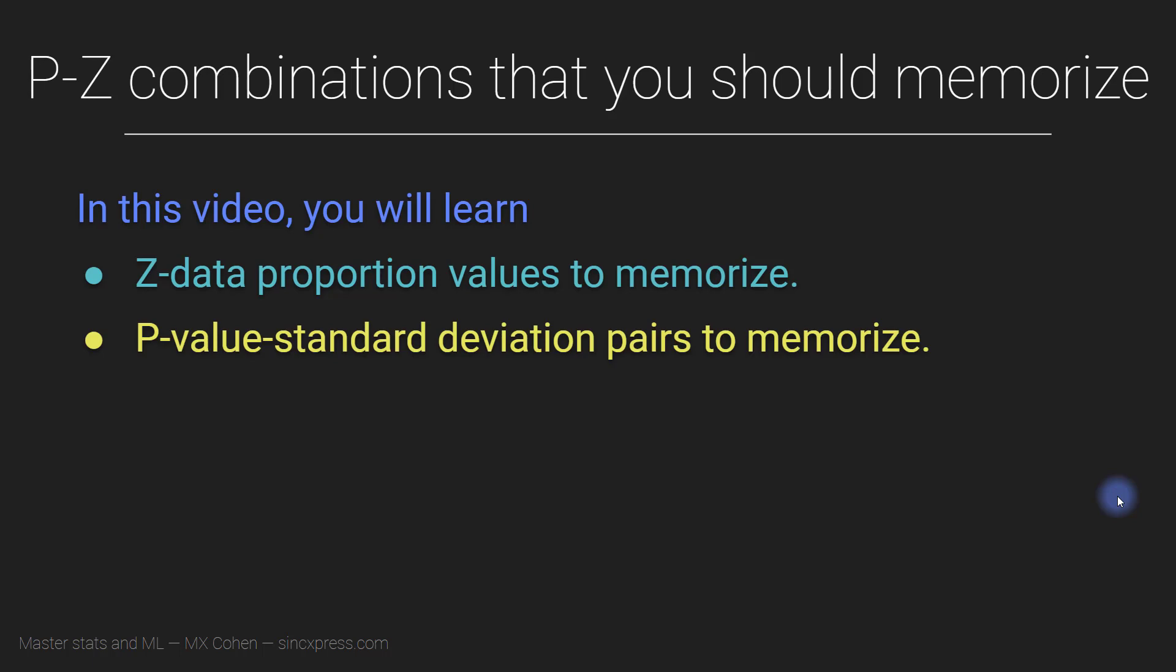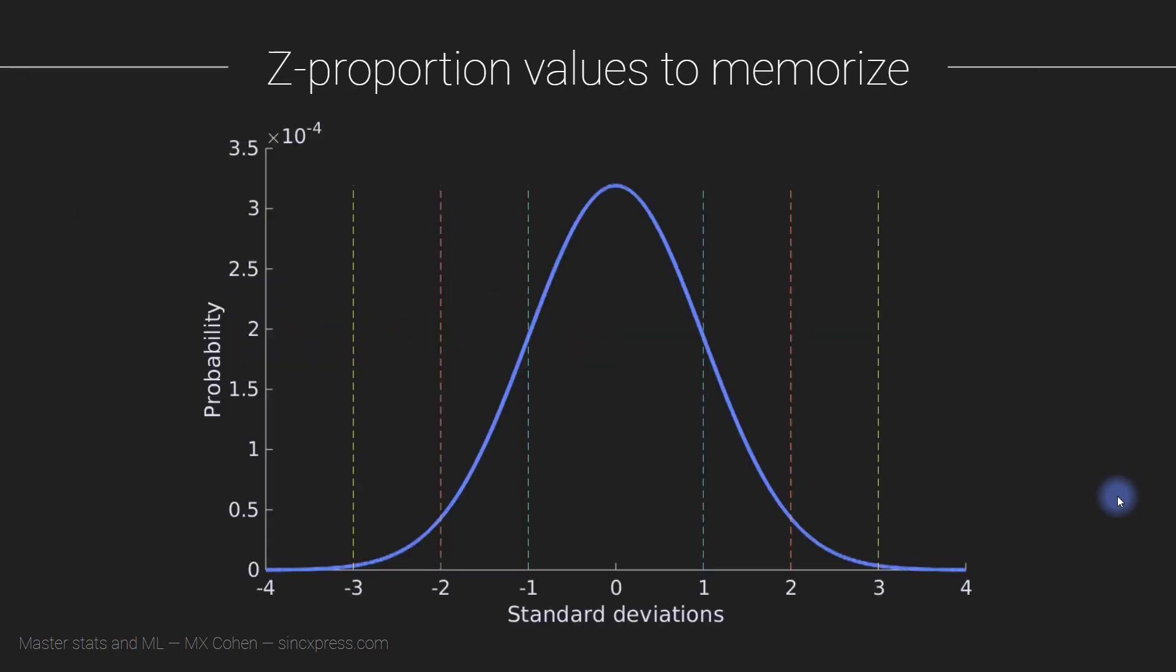There are specific combinations of p-values and z-values that come up so frequently that I think it's worth committing to memory. Not only for exams if you're doing this for a course, but if you are moving into a career that will involve a lot of data analysis, statistics, or machine learning, I think it's really useful to commit these values that I'm going to tell you in this lecture to memory. Trust me, you will be thankful. I memorized these things probably about 20 years ago when I took my stats 101 course in university, and I still use these numbers pretty often.